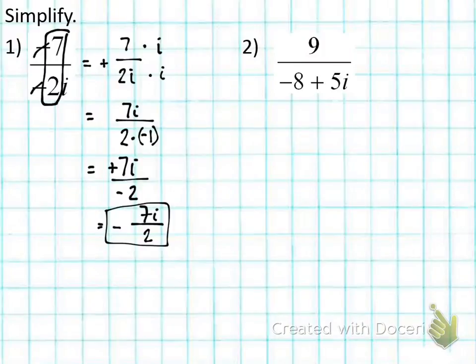Take your time, work the steps out slowly, and you'll get the answer. Number 2, we have 9 divided by this whole denominator. Remember, any whole denominator has parentheses around it. So this is like saying -8 + 5i is a binomial.